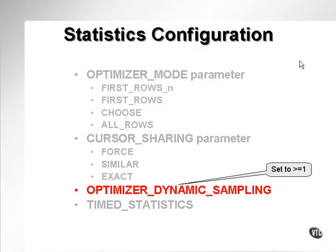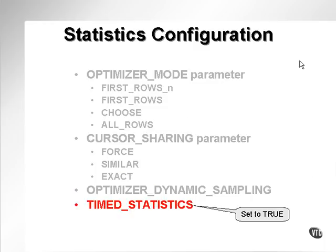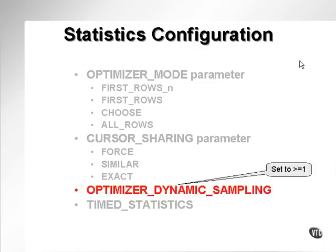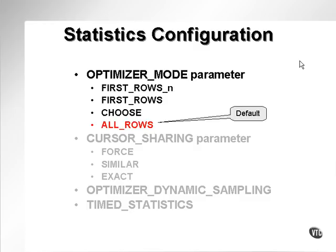optimizer mode, cursor sharing, optimizer dynamic sampling, and timed statistics. The optimizer mode parameter essentially decides how the optimizer behaves. The default is set to all rows.